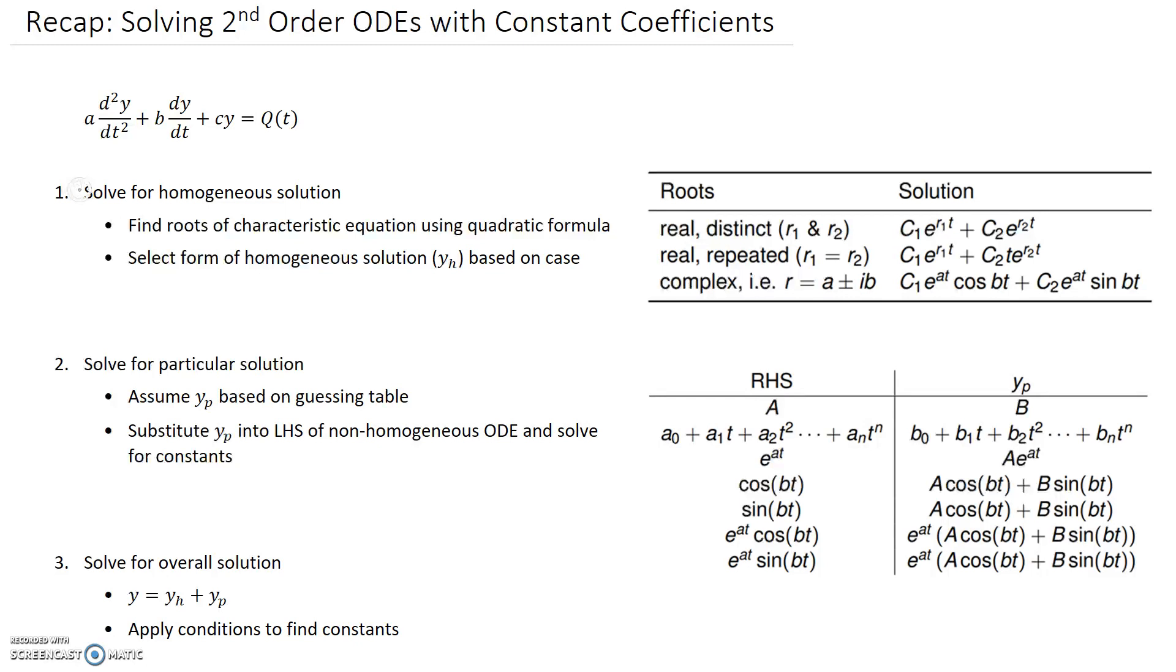So the first thing we need to do is solve for the homogeneous solution to the equation. When we talk about a homogeneous solution, all we mean is that the right-hand side, or the q of t, has to be equal to zero. So if we put zero in up here, what we can do then is find the roots of the characteristic equation, and we can do that using the quadratic formula. The characteristic equation is just formed from this when the right-hand side is zero.